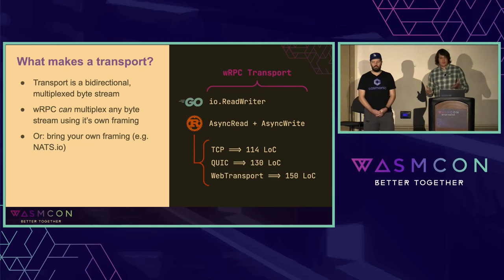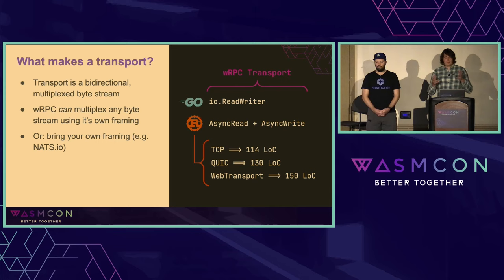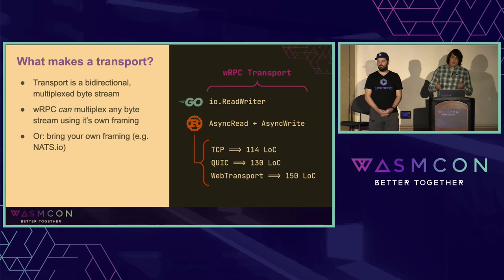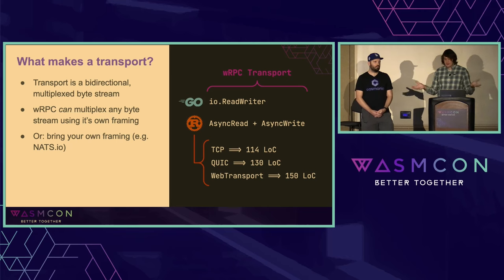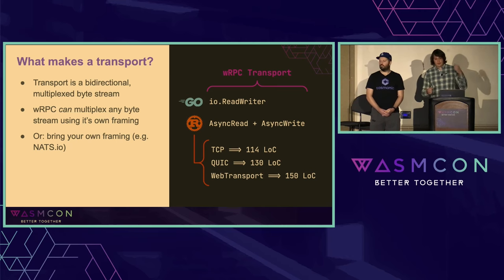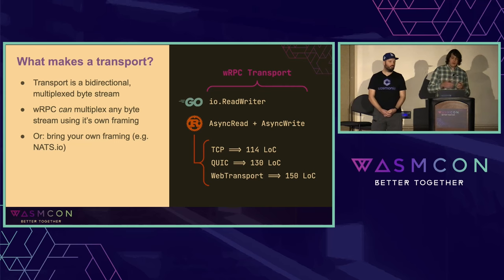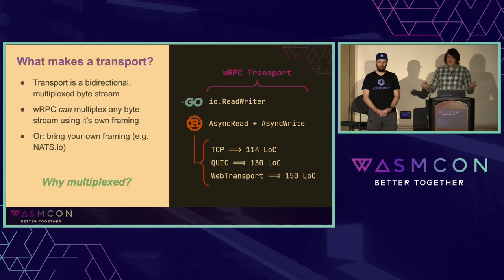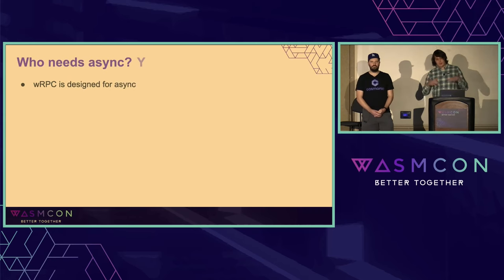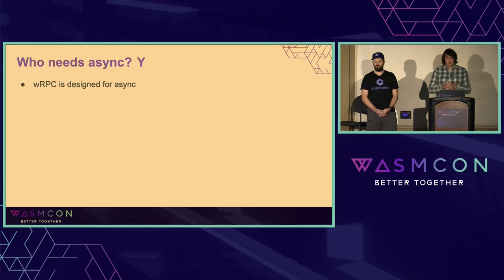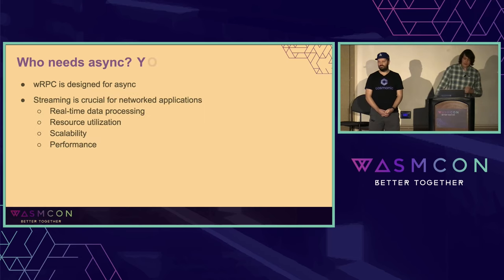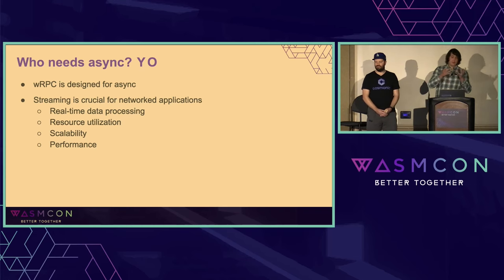We keep talking about WRPC transports — so what is a transport? In WRPC, a transport is just a bidirectional multiplexed byte stream. If your stream is not multiplexed, that's not a problem, because WRPC can provide framing and multiplexing for you. Effectively, if you have something that can read bytes and write bytes, you've got yourself a transport. In Go it'll be io.ReadWriter; in Rust it'll be something like AsyncRead and AsyncWrite. As a result, these transports can be very simple and short — like the TCP transport, which has 114 lines of code. WRPC is designed from the ground up for async — it's a core asynchronous protocol, not an afterthought. Streaming is crucial for network applications: real-time data processing, operating on data as it comes in, better resource utilization, scalability, and better performance.